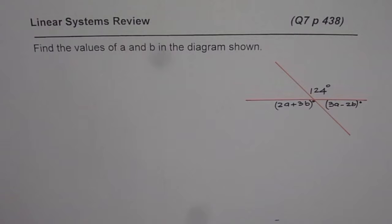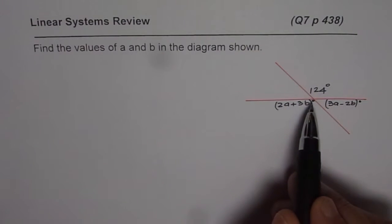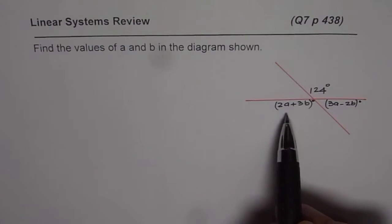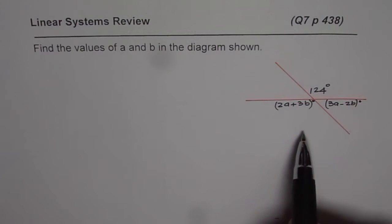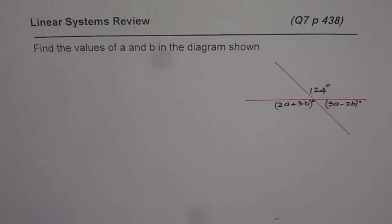Here is question number 7 page 438. Find the value of A and B in the diagram shown. So we have two lines which are intersecting and we are given angle 124 degrees across 2A plus 3B and a linear pair which is 2A plus 3B and 3A minus 2B. You need to solve for values of A and B.